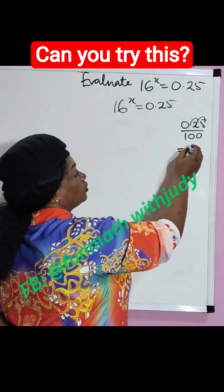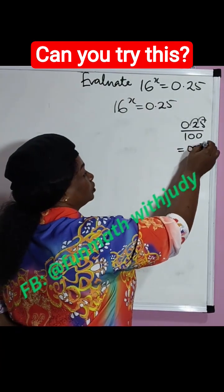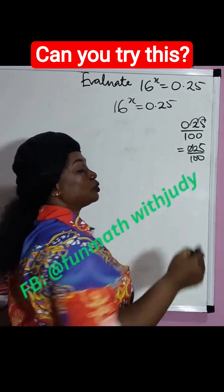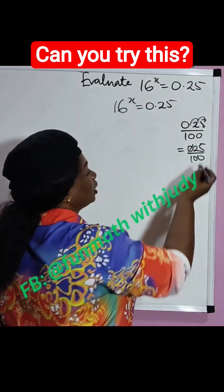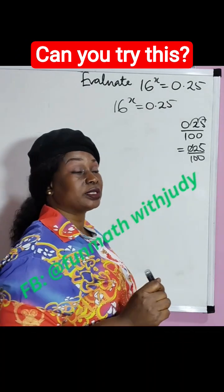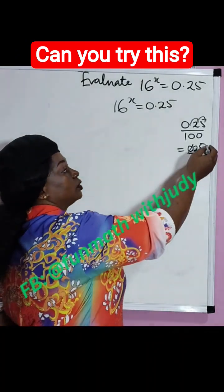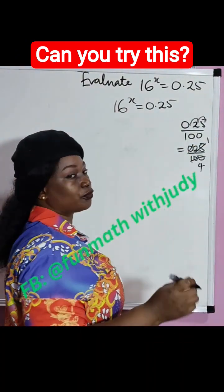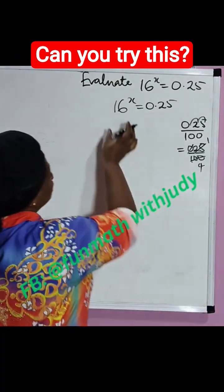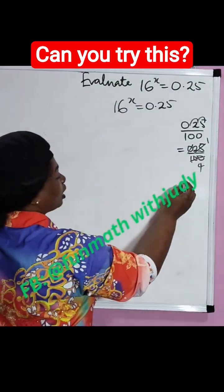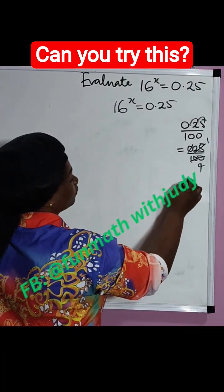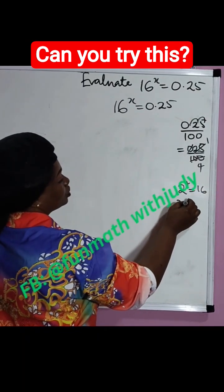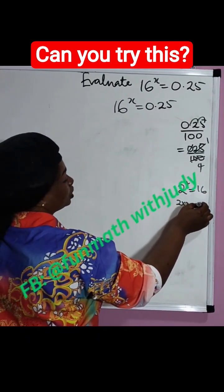This gives us 25 over 100. Zeros before whole numbers are nothing, so let's reduce this to its lowest terms: 25 into 100 gives us 1 over 4. Now for 16, we know that 2 raised to power 4 is equal to 16: 2 times 2 is 4, 4 times 2 is 8, 8 times 2 is 16.